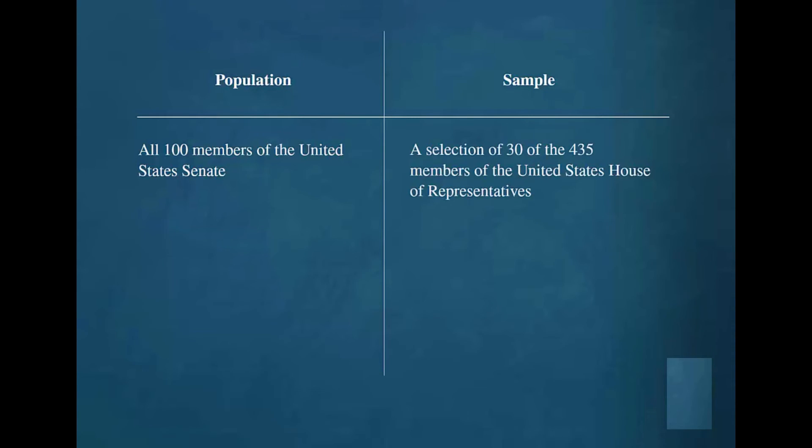A selection of 30 of the 435 members of the United States House of Representatives would be classified as a sample. Only a subset of the population is being selected. Some of the 435 members of the population are excluded.